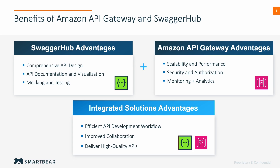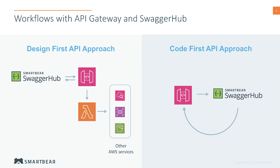Let's take a look at some integrated workflows using the tooling together. There are two main workflows that we see with Amazon API Gateway and SwaggerHub. The first is a design-first API approach. Users will create the API in SwaggerHub or in another tool, and then publish that directly to the Amazon API Gateway. Once it's published to the Gateway, we have the ability to interact with mocks, interact with Lambda functions, and then interact with other AWS services like RDS, S3, and anything alike.